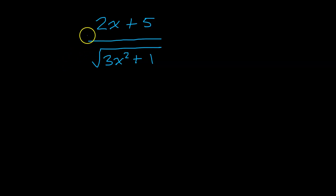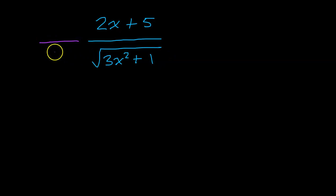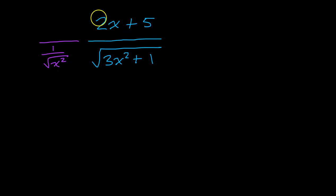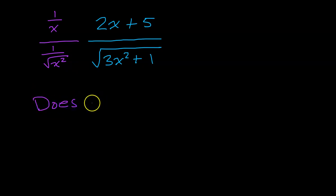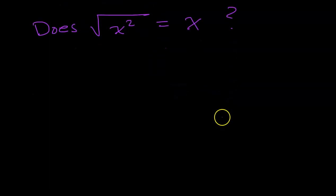We're getting closer to being ready to tackle the actual problem. What if we had a numerator without a radical, but the denominator was underneath the square root? You might think that for the denominator you need 1 over the square root of x squared. But you have to make sure that whatever you put in the numerator has the same value so that you're really multiplying by 1. The question is: does the square root of x squared equal x?